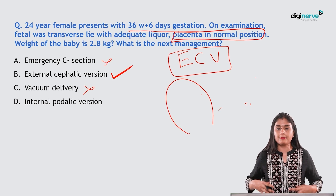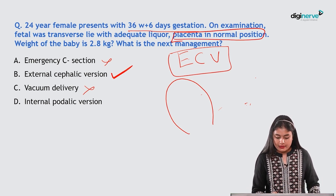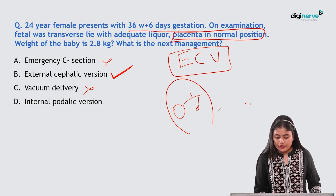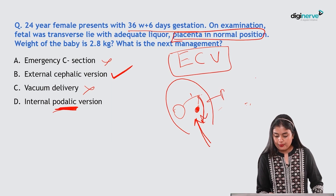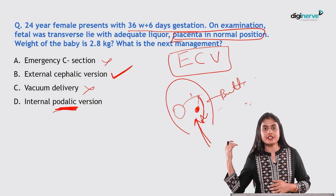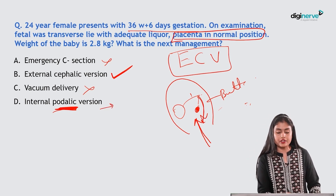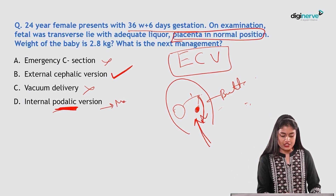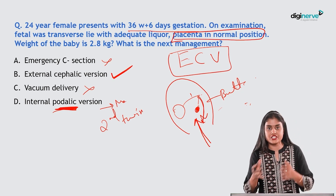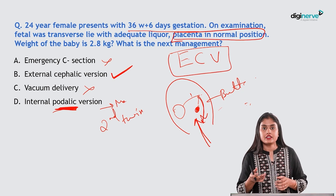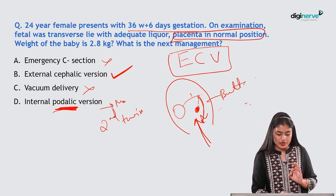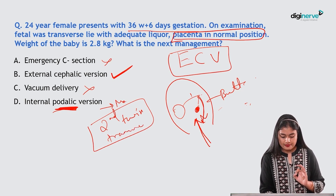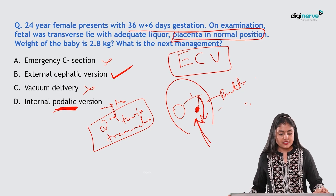In internal podalic version, the hand enters the uterine cavity, grasps the feet of the fetus, and pulls the buttocks down for delivery by breech mechanism. In modern obstetrics, the only indication for internal podalic version is for a second twin in transverse lie after the first twin has been delivered vaginally. The correct management here is external cephalic version.